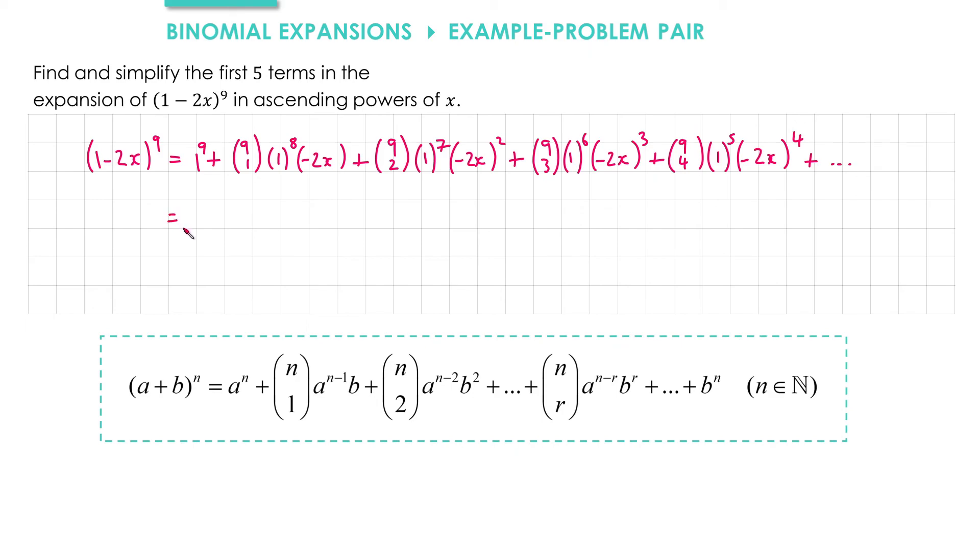Next we'll input our binomial coefficients and simplify. 1 to the 9 is just 1. 9 choose 1, as we talked about earlier, we don't need a calculator for that. That's just 9. And then we'll ignore the 1 to the 8 and just write in the minus 2x.